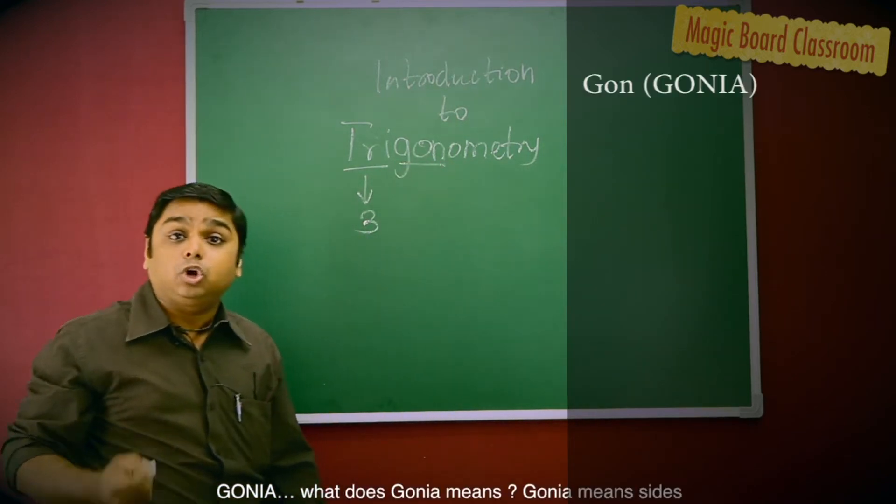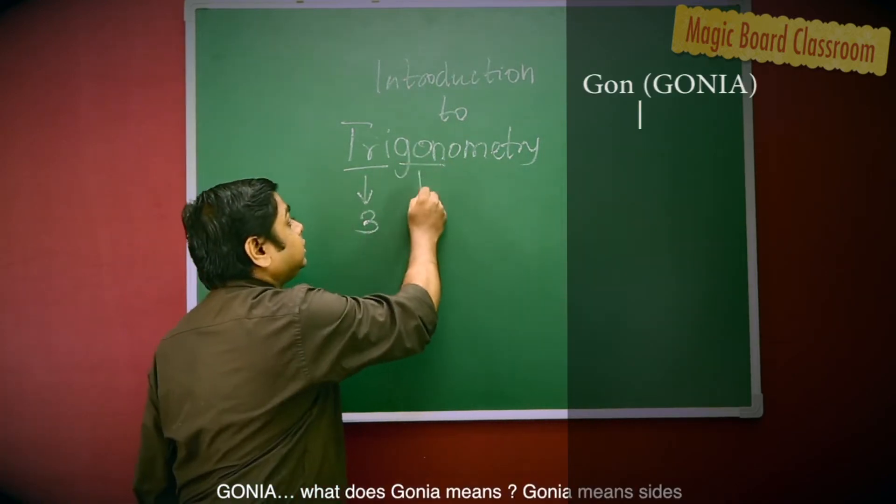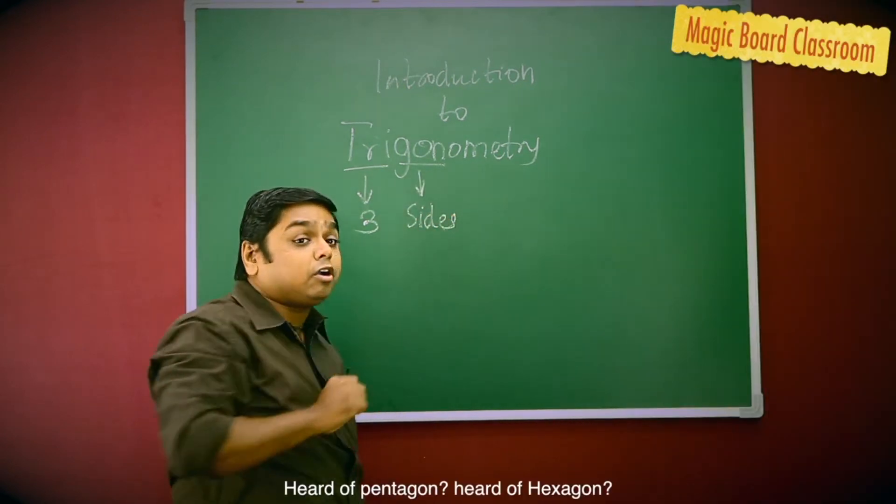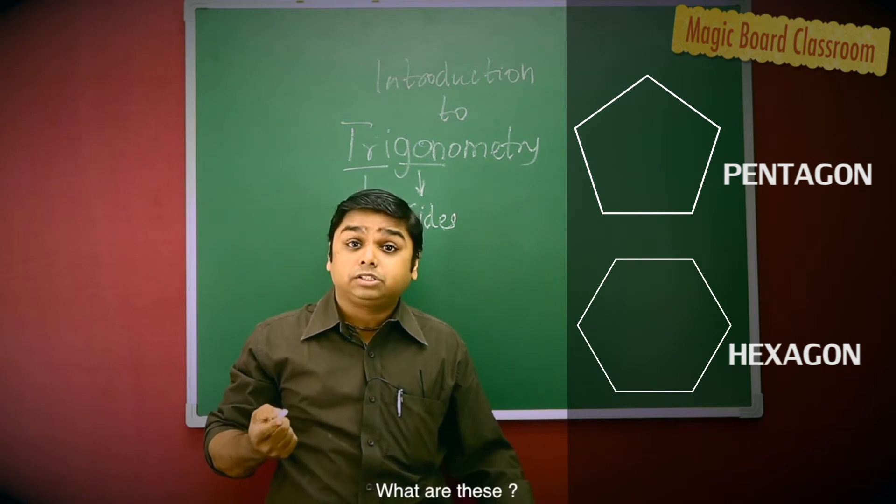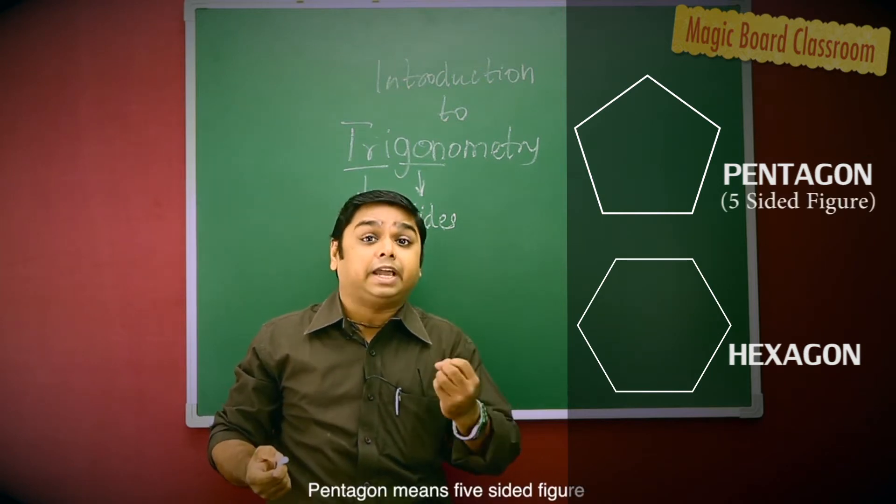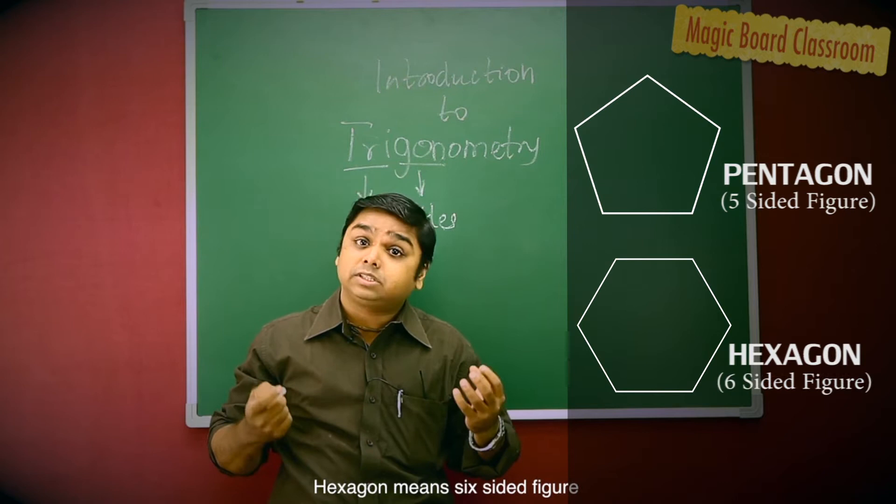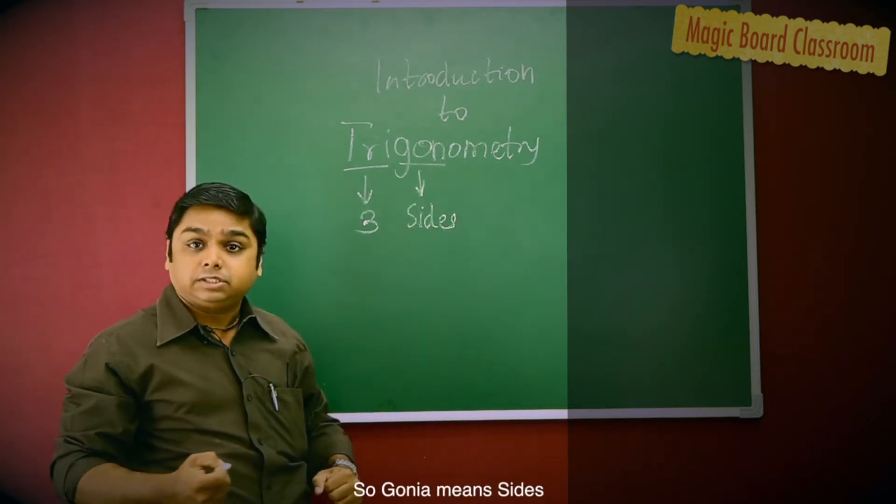Gon. What does Gon mean? Gon means sides. Heard of pentagon, heard of hexagon. What are these? Pentagon means five-sided figure. Hexagon means six-sided figure. So, Gon means sides.